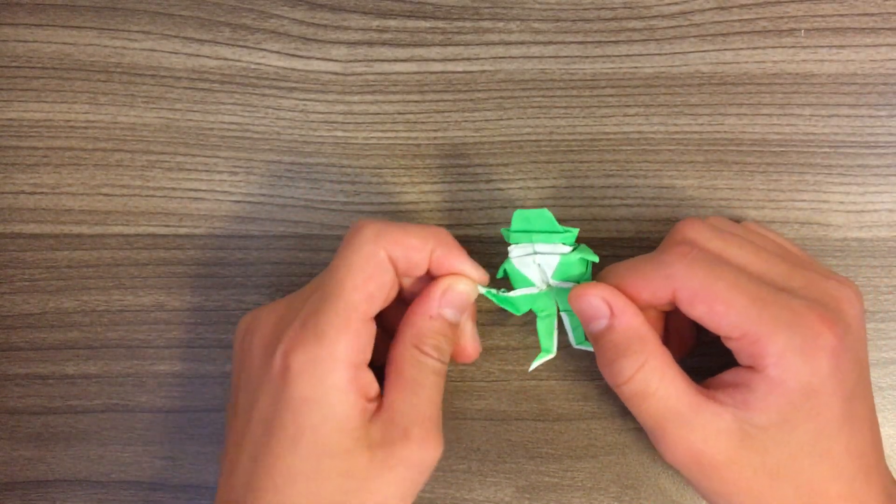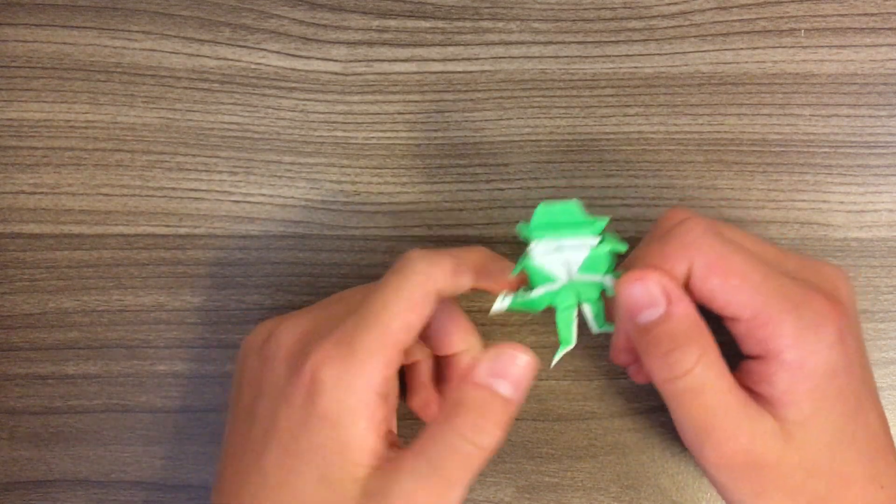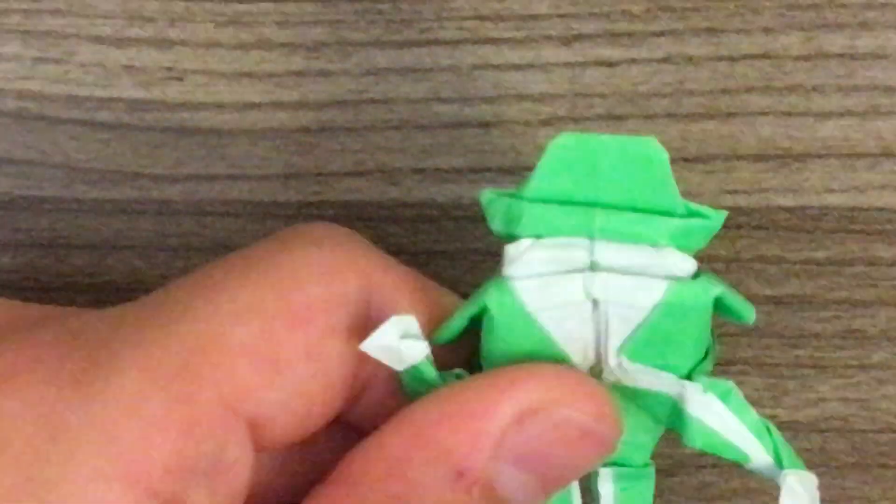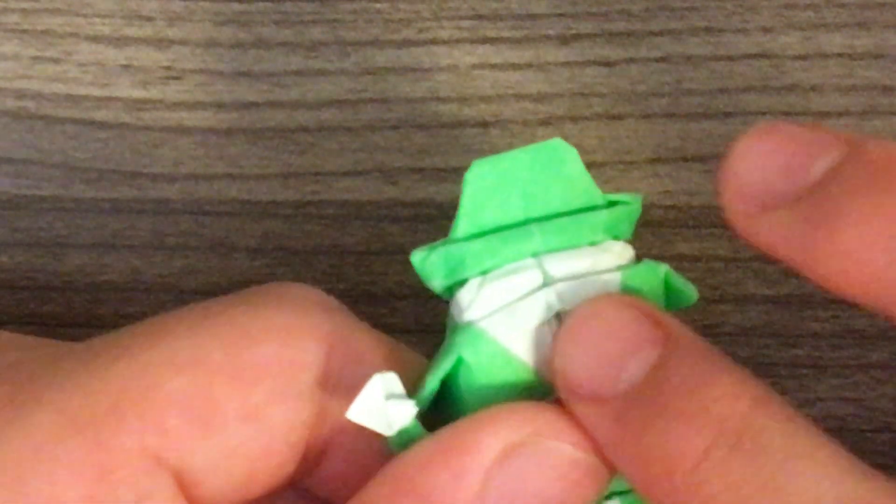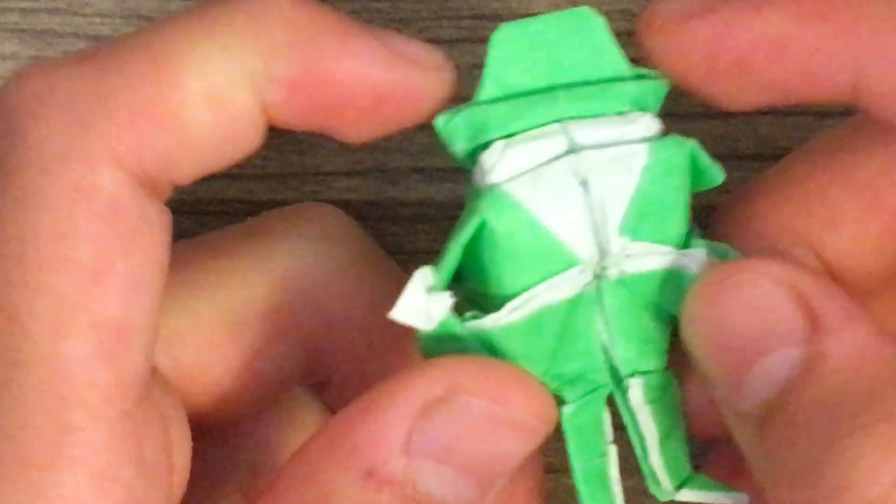I used a 6x6 inch piece of paper for it, and it came out pretty nicely. It has a mustache here, and eyes on the sides of its head, and then a hat.